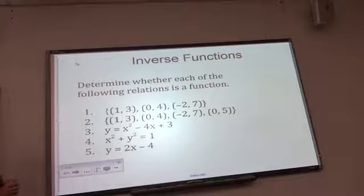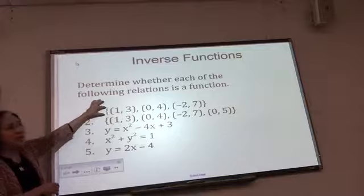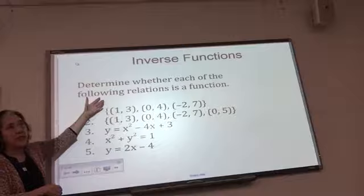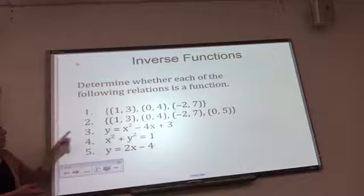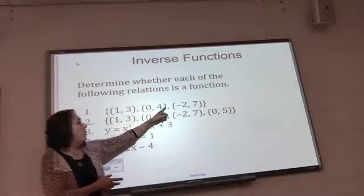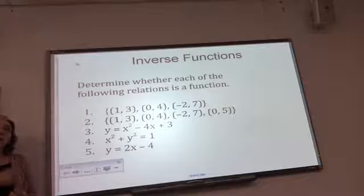Okay, so first of all, we're going to review what a function is. Relations are just sets of points. So I'm just giving you this arbitrary set of points here. This is called a finite relation because there's only one, two, three members in the relation. And what it's showing, remember, is pairing. So one is paired with three, zero is paired with four, negative two is paired with seven.